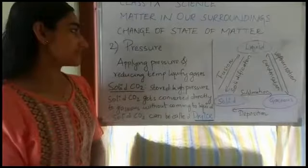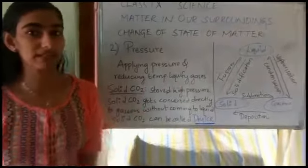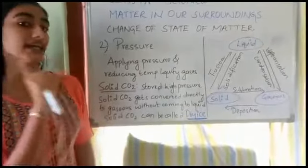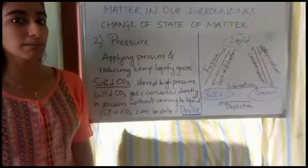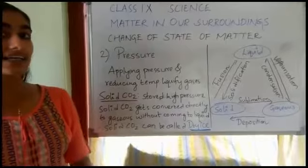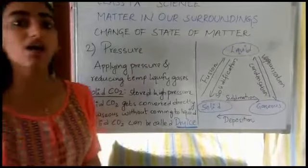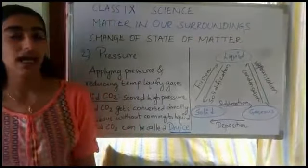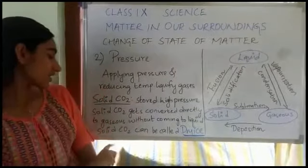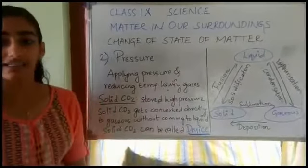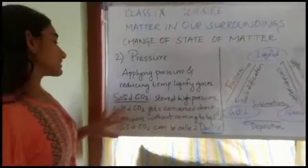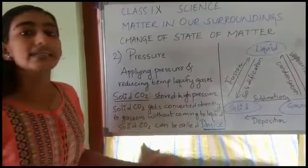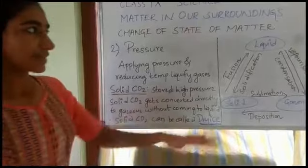The second parameter is pressure. Applying pressure and reducing the temperature will liquefy gases. An important point here is solid CO2. Solid CO2 is stored under high pressure and gets converted directly into gaseous state without coming into the liquid state. Therefore solid CO2 can be called dry ice. A common question is: why is solid CO2 called dry ice? The reason is that solid CO2 converts directly into gaseous state without passing through the liquid state.